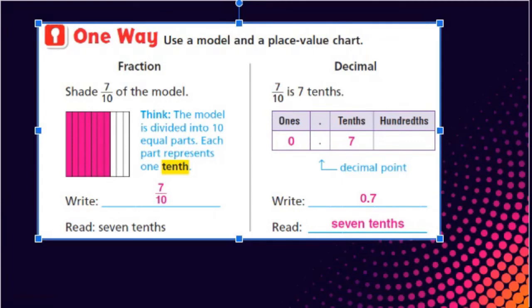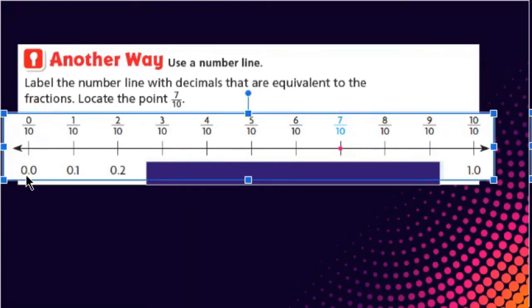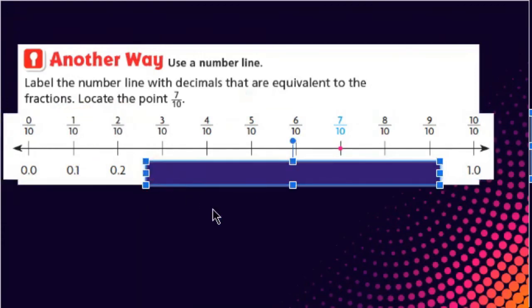Now there's another way that we can show seven tenths as a decimal. And that's by using a number line. Number lines can be so helpful because you can see exactly what things match up. The way that they have it designed, they have the fraction and the equivalent decimal underneath it. So they already started this pattern for you. So if you're at zero tenths, you have zero in your tenths place. One tenth, you have one in your tenths place. Two tenths, you have two in your tenths place. What do you think would come next? Let's see if you got it. That's right, 0.3 is the same as three tenths.